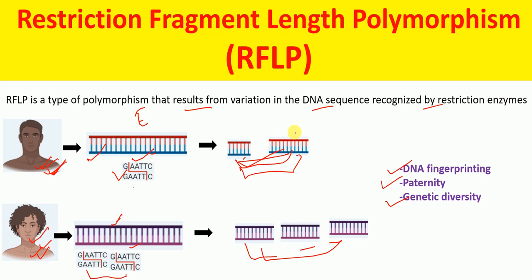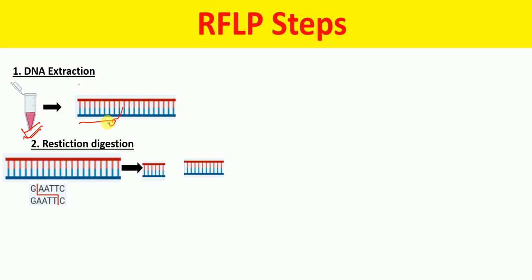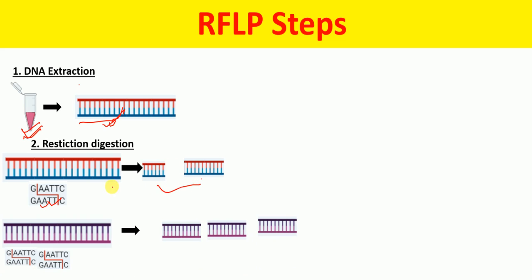The steps involved in RFLP are as follows. The first step is isolation of DNA from the sample. The next step is restriction digestion: we use a suitable restriction enzyme that recognizes its restriction site and cuts the DNA into fragments. For one sample the enzyme cuts at one site producing two fragments; for another sample it cuts at two sites producing three fragments.